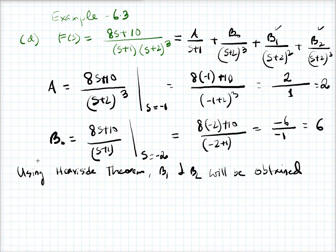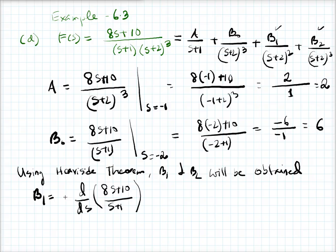To find B1, you multiply by (s+2) whole cube to isolate the expression, but then you take the derivative d/ds of (8s+10)/(s+1), divided by factorial 1. Then you evaluate this at s equal to minus 2. So you take the first derivative and evaluate it at s = -2.